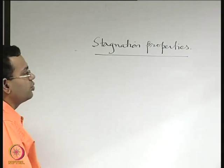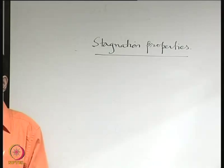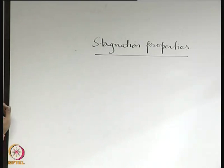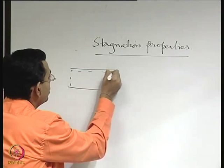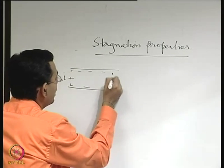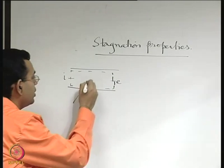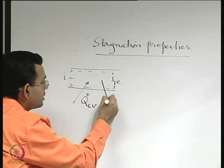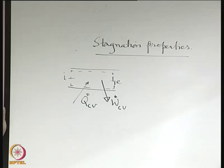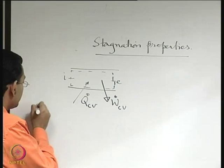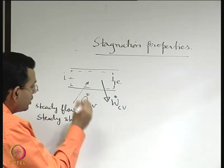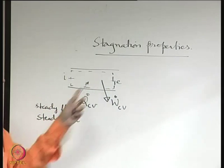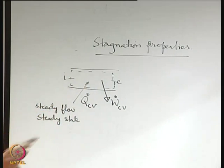To do that, we will refer to an important thermodynamic property — specifically the first law of thermodynamics. Consider a control volume with some inlet I and some exit E, with some rate of heat transfer Q-dot CV and some rate of work done W-dot CV. Let us say that the flow is steady and the properties of the fluid within the control volume do not change with time.